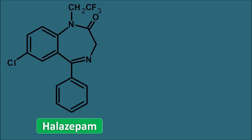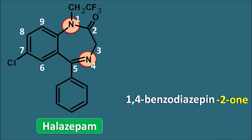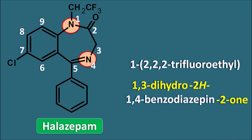Next is halazepam. Root name: 1,4-benzodiazepine-2-one, prefixed with 1,3-dihydro and 2H. At position 1 there is a 2,2,2-trifluoroethyl group — an ethyl group in which the terminal hydrogens are replaced by three fluorines. Additional groups: 5-phenyl and 7-chloro. The IUPAC name of halazepam is: 7-chloro-1,3-dihydro-1-(2,2,2-trifluoroethyl)-5-phenyl-2H-1,4-benzodiazepine-2-one.